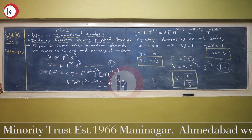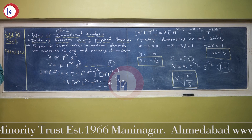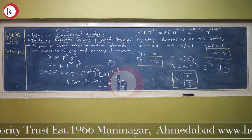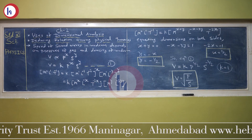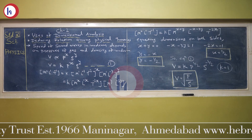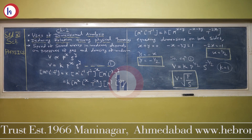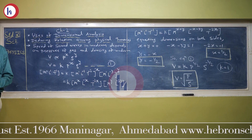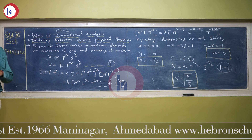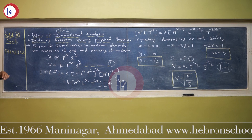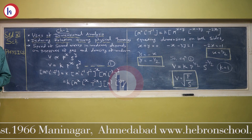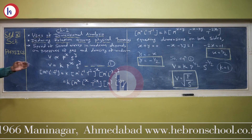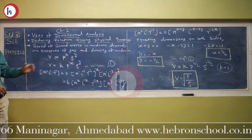We remove the proportionality and introduce a dimensionless constant K, writing V = K × P^X × ρ^Y. Now we write the dimension of velocity as M⁰ L¹ T⁻¹. The dimensional formula of pressure is M¹ L⁻¹ T⁻², raised to power X. Density is mass upon volume, so it is M¹ L⁻³, raised to power Y. Multiplying powers into dimensions, we get K × M^X × L^(−X) × T^(−2X) × M^Y × L^(−3Y).